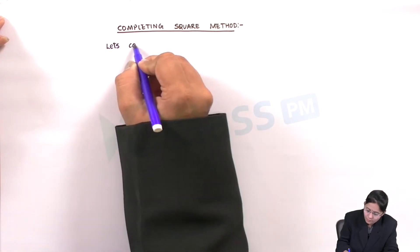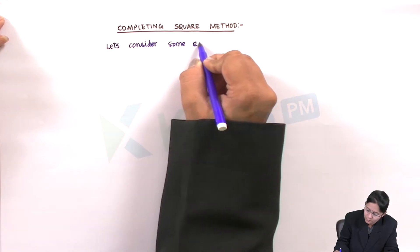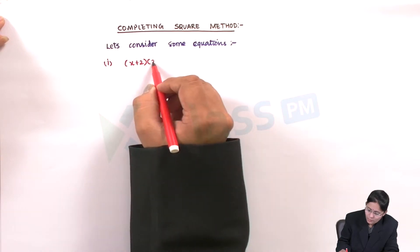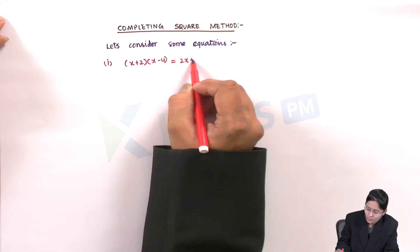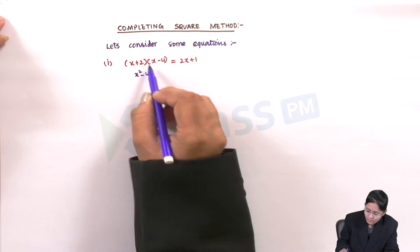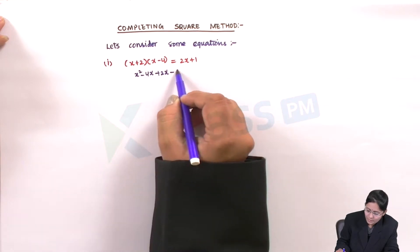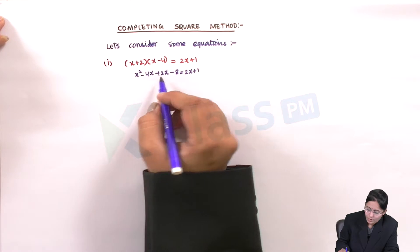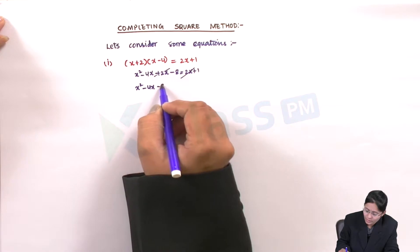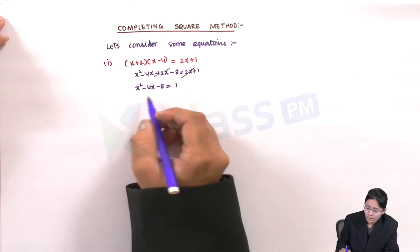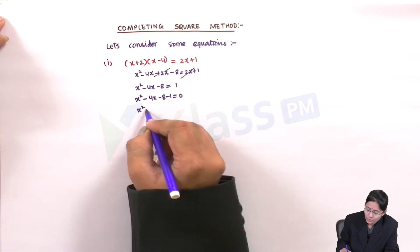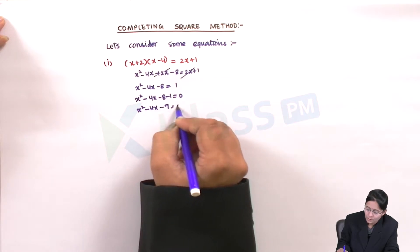Let's consider some equations. The first one being: (x + 2)(x − 4) = 2x + 1. Let me solve it. It implies x² − 4x + 2x − 8 = 2x + 1. Then 2x and 2x get cancelled, giving x² − 4x − 8 = 1, which becomes x² − 4x − 9 = 0.